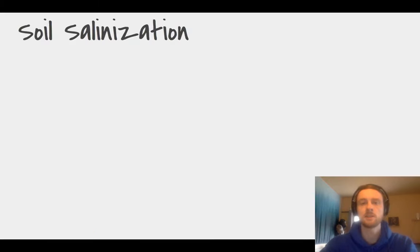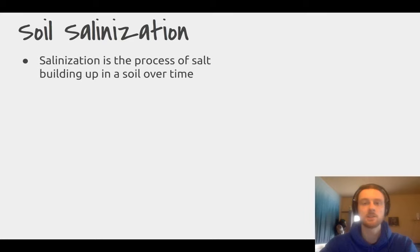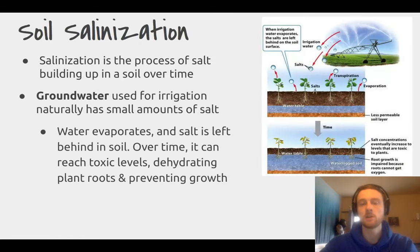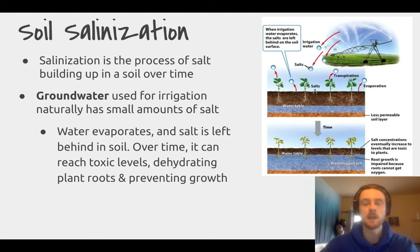Next, we'll talk about soil salinization, which is the process of salt building up in soil over time. The main way it happens is when farmers irrigate their crops with groundwater, which naturally contains small amounts of salt. When that groundwater is pumped up and put onto crops, over time the water will evaporate and leave salt behind. As this happens over years and years, that salt will eventually build up to a concentration so high that it may dehydrate the roots of the plants, stunting or even killing them if they're not tolerant to high levels of salt.